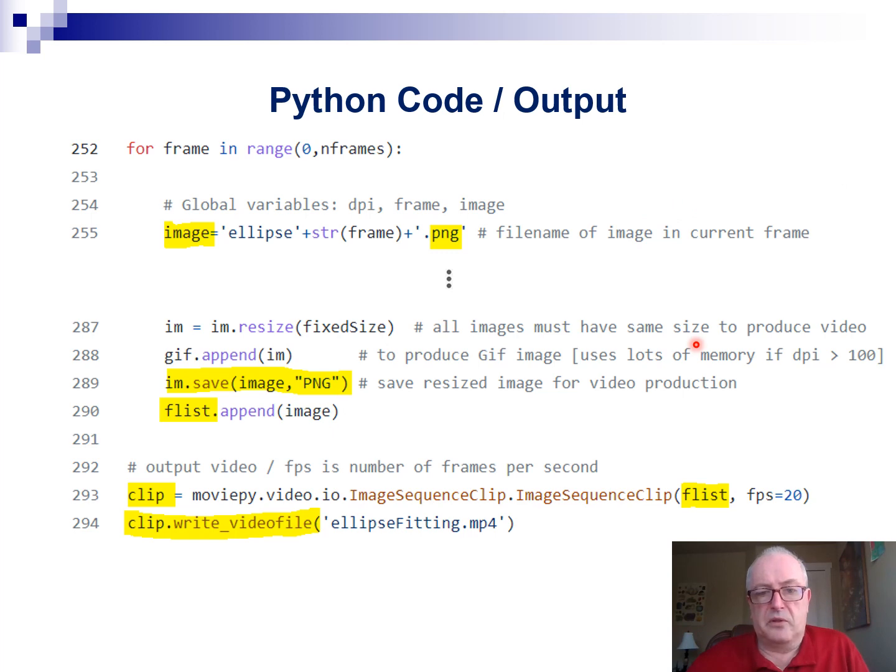The output of the code is going to consist of 50 images. And what you've seen in the previous slide is the result after 15 images and the final result after 50 images.